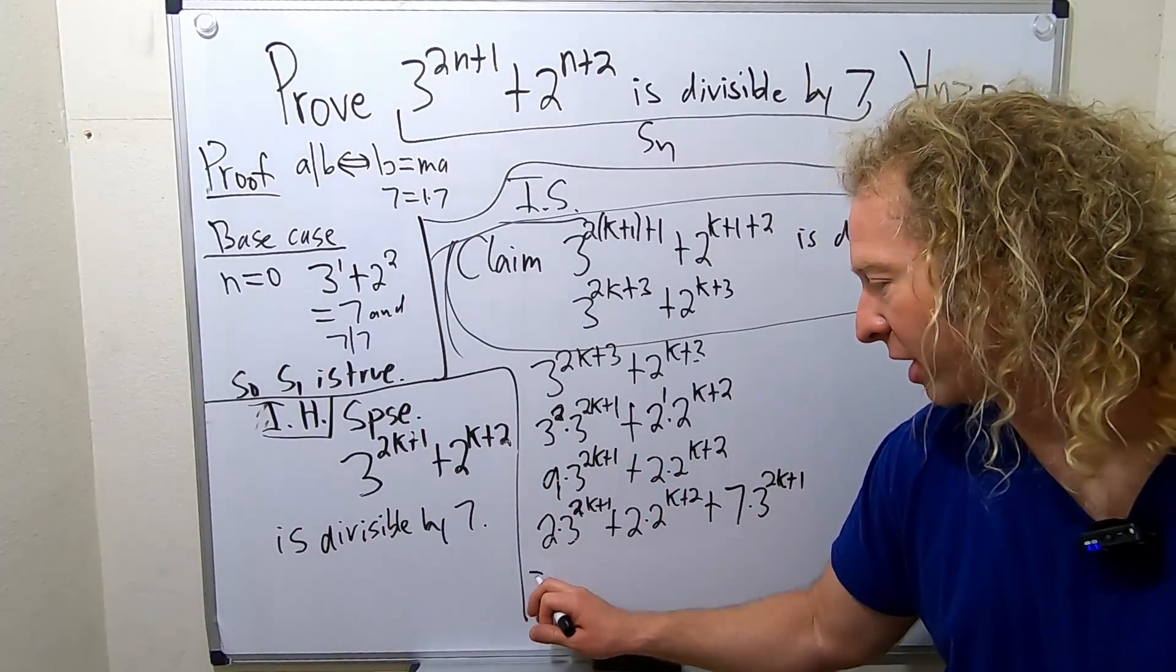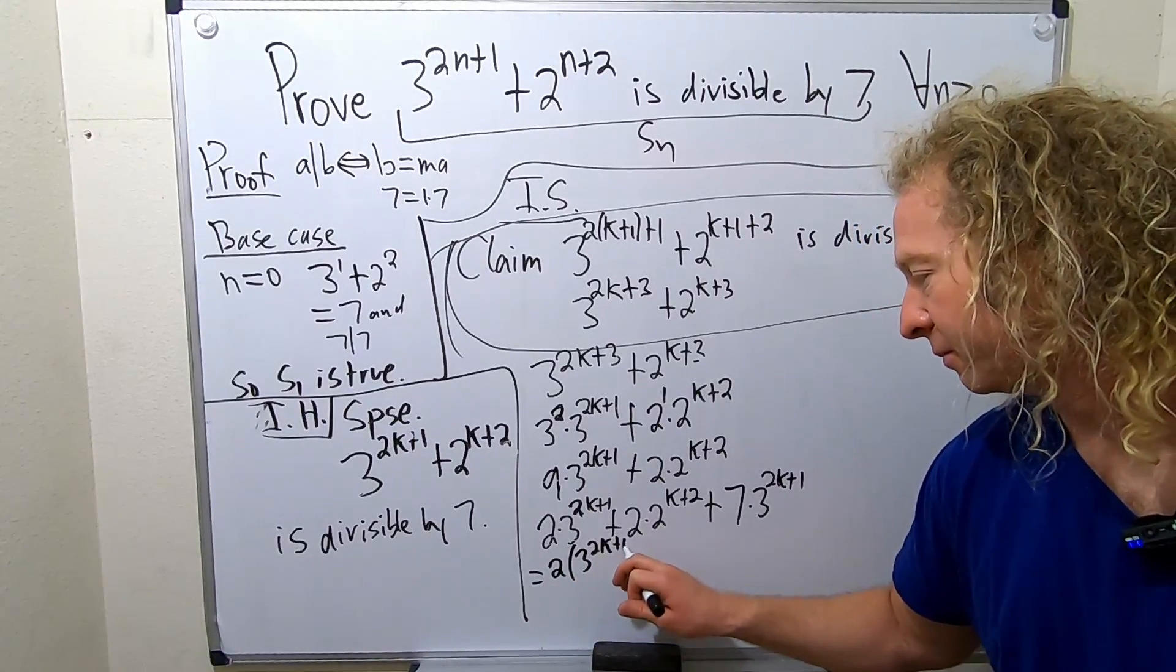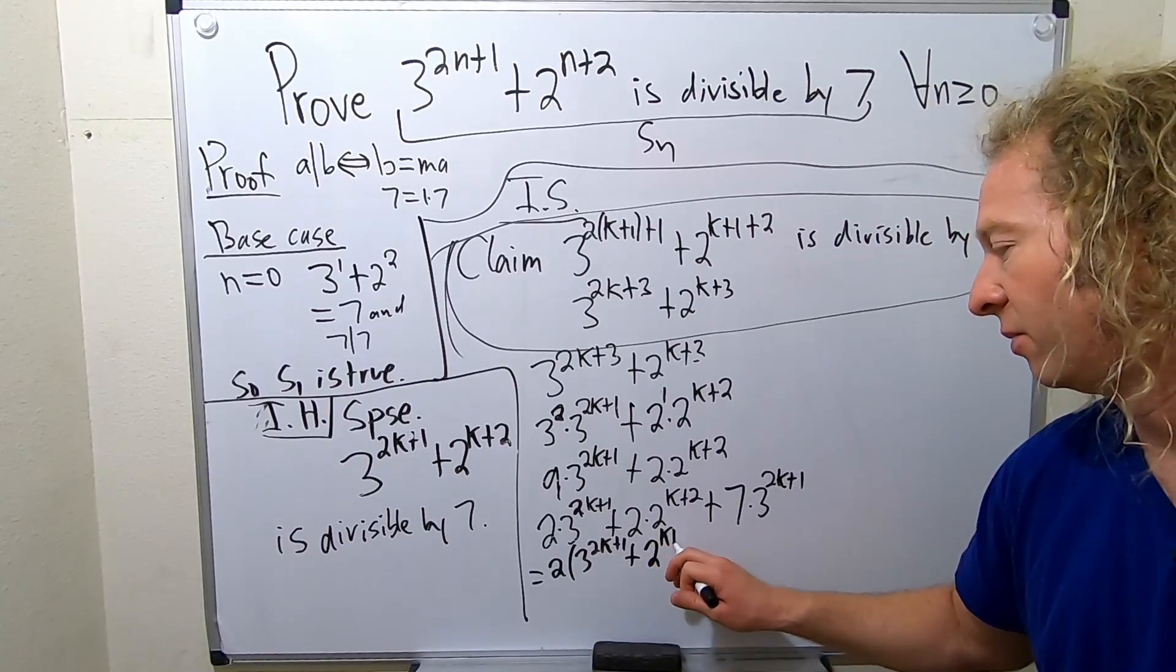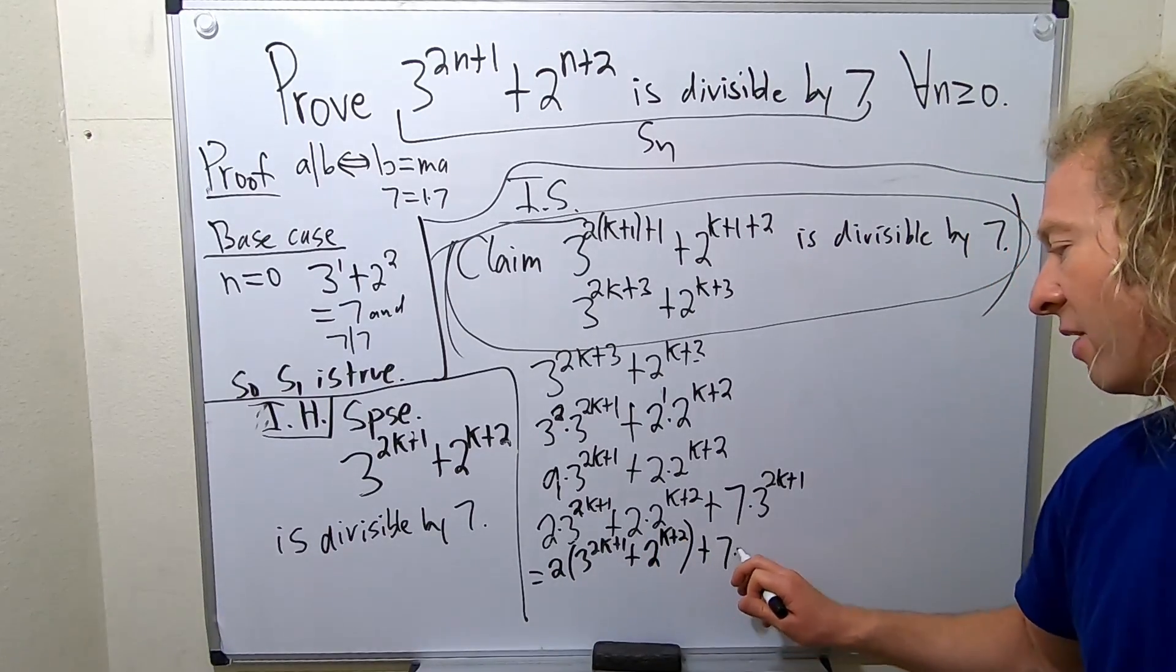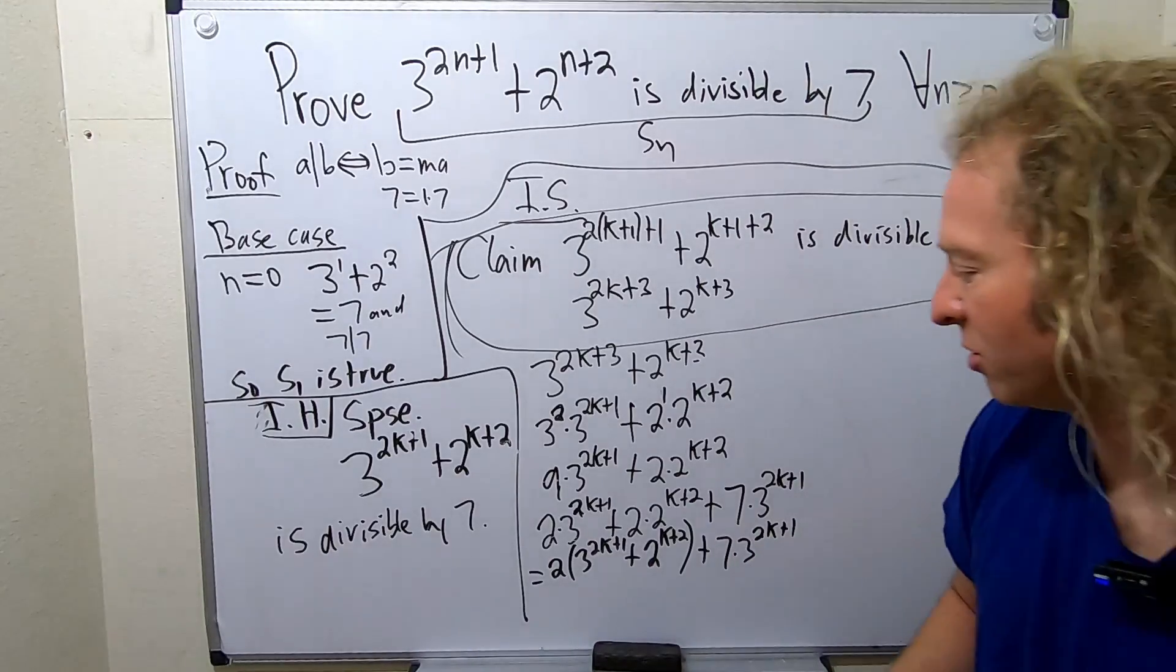Why do I do that? Because now, I can pull out a 2 here and we have 3 to the 2k plus 1 plus 2 to the k plus 2, a lot of notation, plus 7 times 3 to the 2k plus 1. So why is that useful?